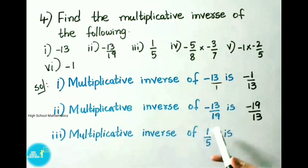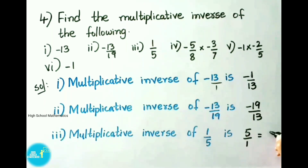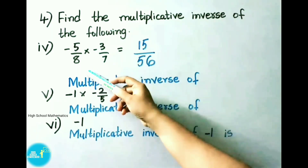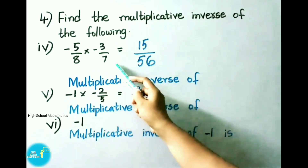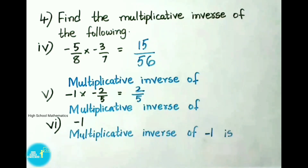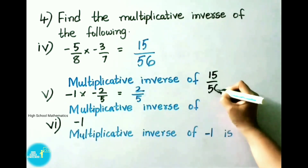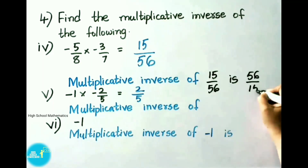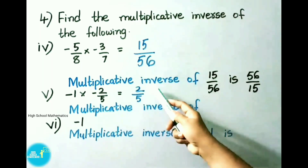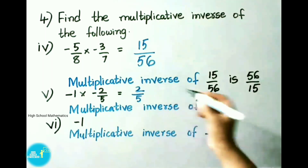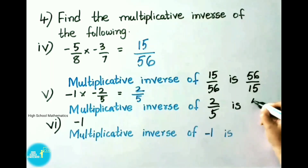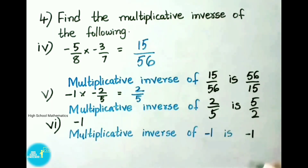Third one: multiplicative inverse of 1 by 5 is 5 by 1, which is nothing but 5. Fourth one: minus 5 by 8 into minus 3 by 7. That equals to minus into minus means plus; multiply numerators 5 threes are 15, multiply denominators 8 sevens are 56. So fourth one is 15 by 56. Multiplicative inverse of 15 by 56 is 56 by 15. Fifth one: minus 1 into minus 2 by 5. That equals to minus into minus means plus; 1 twos are 2, multiply denominator 1 into 5 means 5. So this value is 2 by 5. Multiplicative inverse of 2 by 5 is 5 by 2. Sixth one: multiplicative inverse of minus 1 is minus 1.